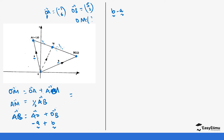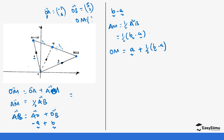Now we have AB. Going back to AM — we said AM is one-half of AB, and we've determined AB is B minus A, so AM is one-half of (B minus A). Going back to OM: OM equals OA plus AM, which is A plus one-half(B minus A). This gives A plus one-half B minus one-half A, and collecting like terms: one-half A plus one-half B.